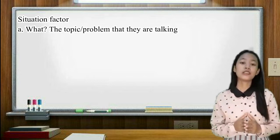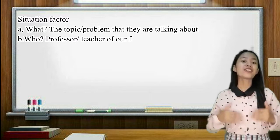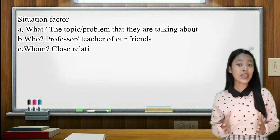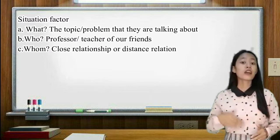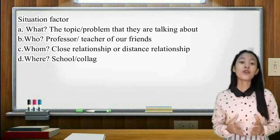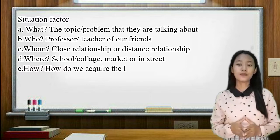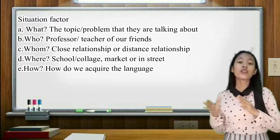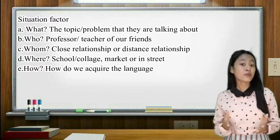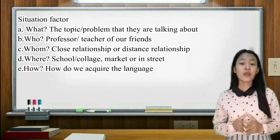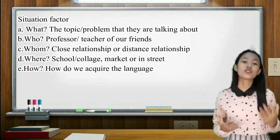The first one is what - what's the topic and the problem they are talking about. The second one is who - maybe like a professor, teacher, or our friends. The third one is whom - maybe our close relationship, sometimes our friends, and distance relationship, maybe a teacher and a student.